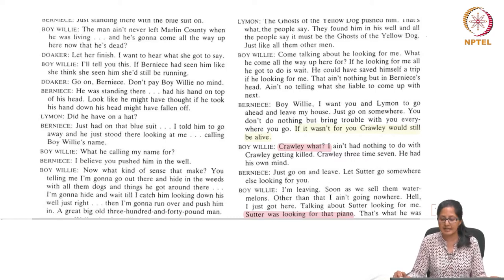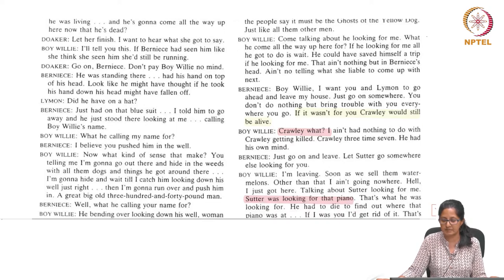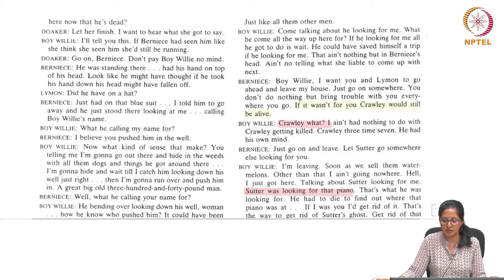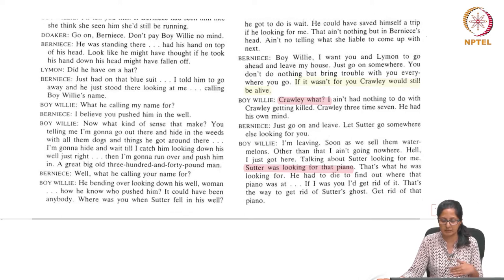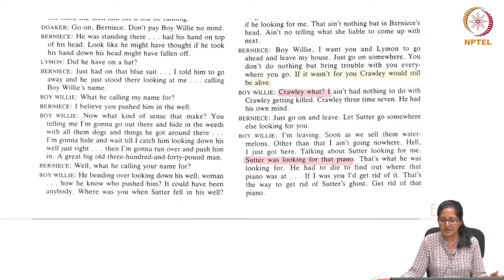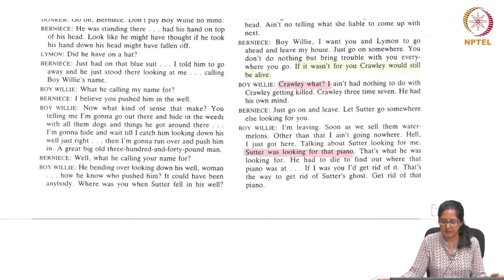Boivoli insists he had nothing to do with Crawley getting killed, saying Crawley had his own mind, and that he is leaving as soon as they sell the watermelons. He mentions that Sutter was looking for the piano — not for him. Meanwhile, Bernice earlier claimed she saw Sutter's ghost upstairs, and Boivoli uses that to his advantage, suggesting Sutter is searching for the piano.